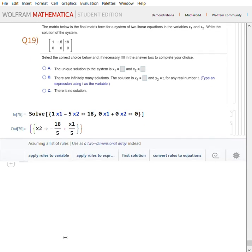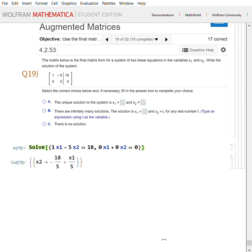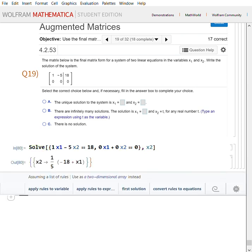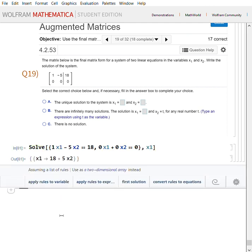Close curly brackets, close big bracket. So as you see, there is no unique solution to the system. And the question is asking for the solution in terms of x1, and if not, give it to me in terms of x2. So simply just go back to your same command, add the comma x2. Sorry, x1, because that's what we want. All right, so now we have it for x1 and it's expanded. Sometimes you have to expand it. It says type an expression using t as the variable, so the answer would be 18 plus 5t.